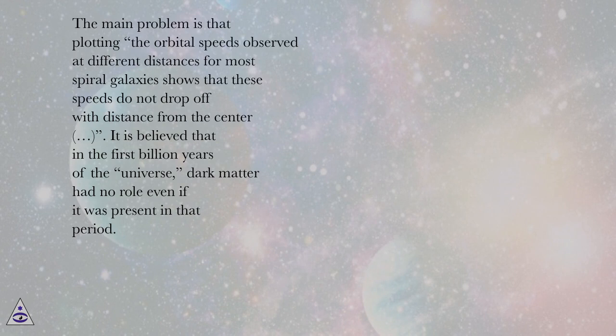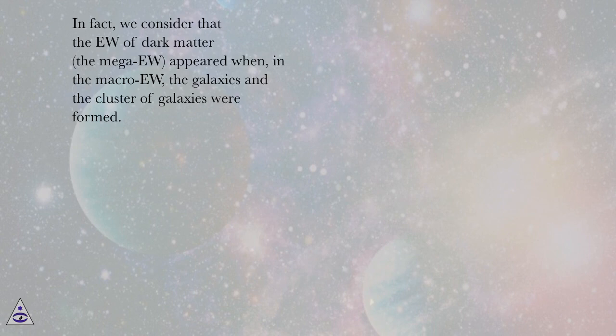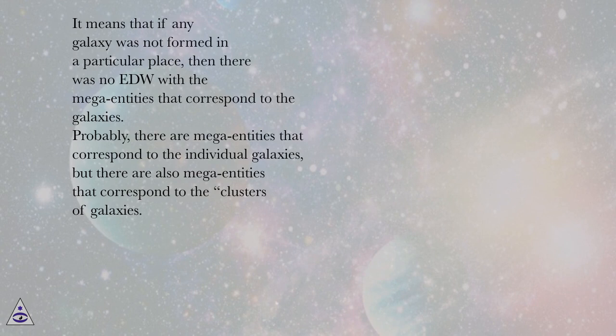In fact, we consider that the EU of dark matter, the mega-EU, appeared when, in the macro-EU, the galaxies and the clusters of galaxies were formed. It means that if any galaxy was not formed in a particular place, then there was no EDW with the mega entities that correspond to the galaxies.